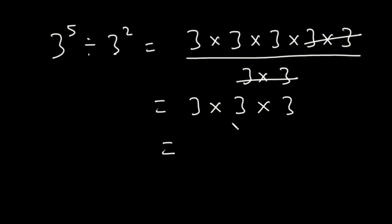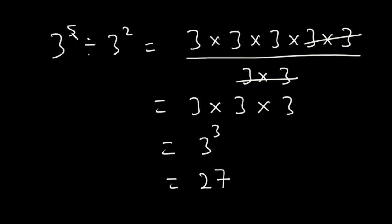3 times 3 times 3 is equal to 3 to the 3rd power, which is equal to 27. So if you want to divide common bases, you subtract the exponents. Therefore, 3 exponent 5 divided by 3 exponent 2 is 3 exponent 5 minus 2. 5 minus 2 is 3, so it's equal to 3 exponent 3.